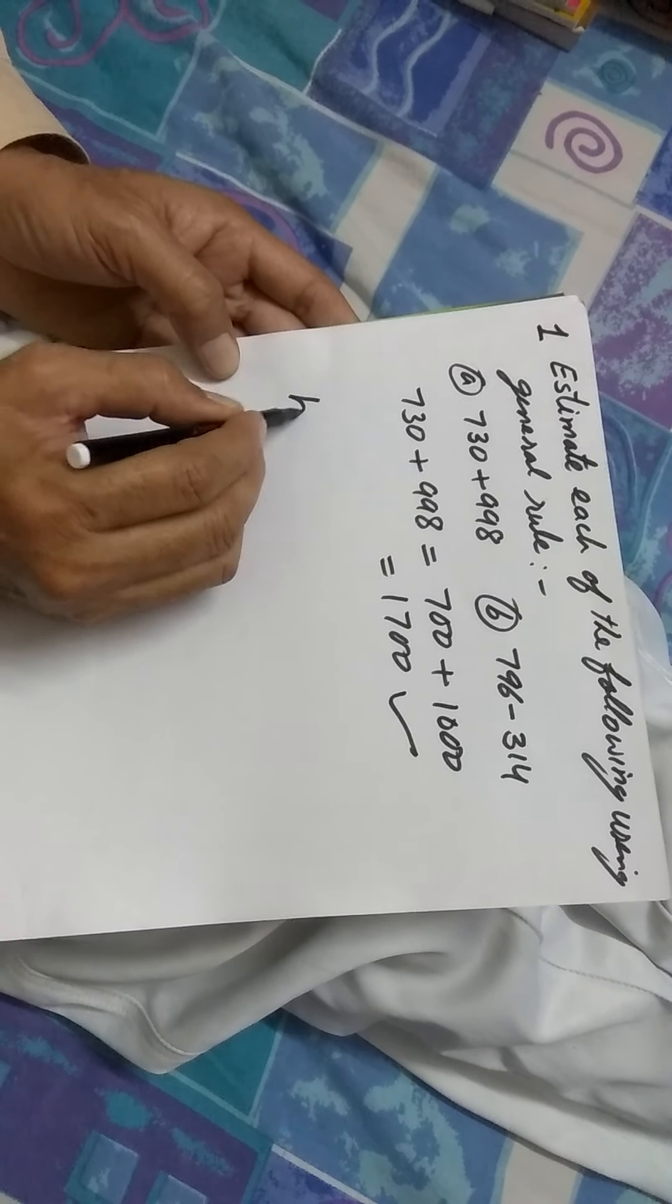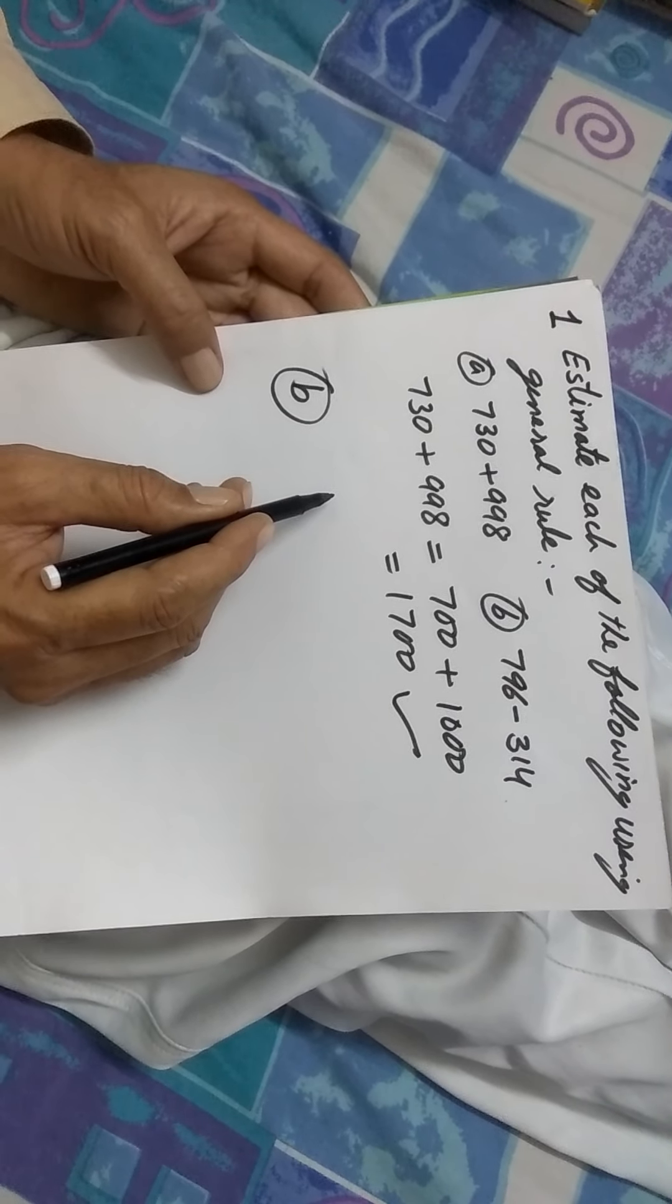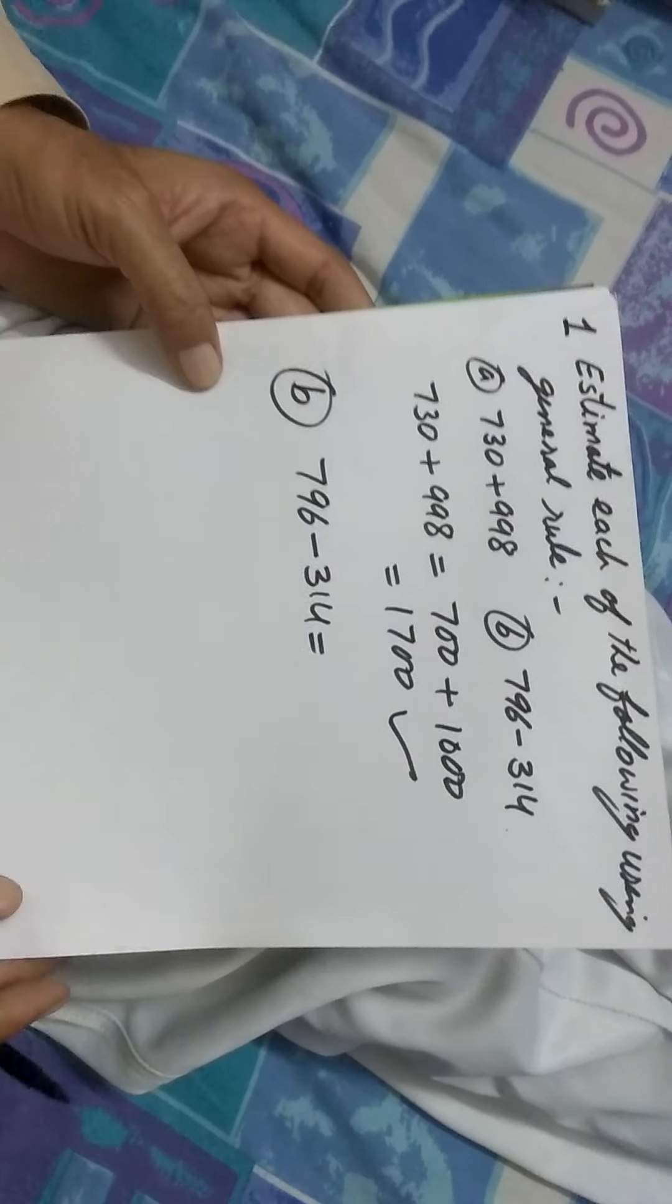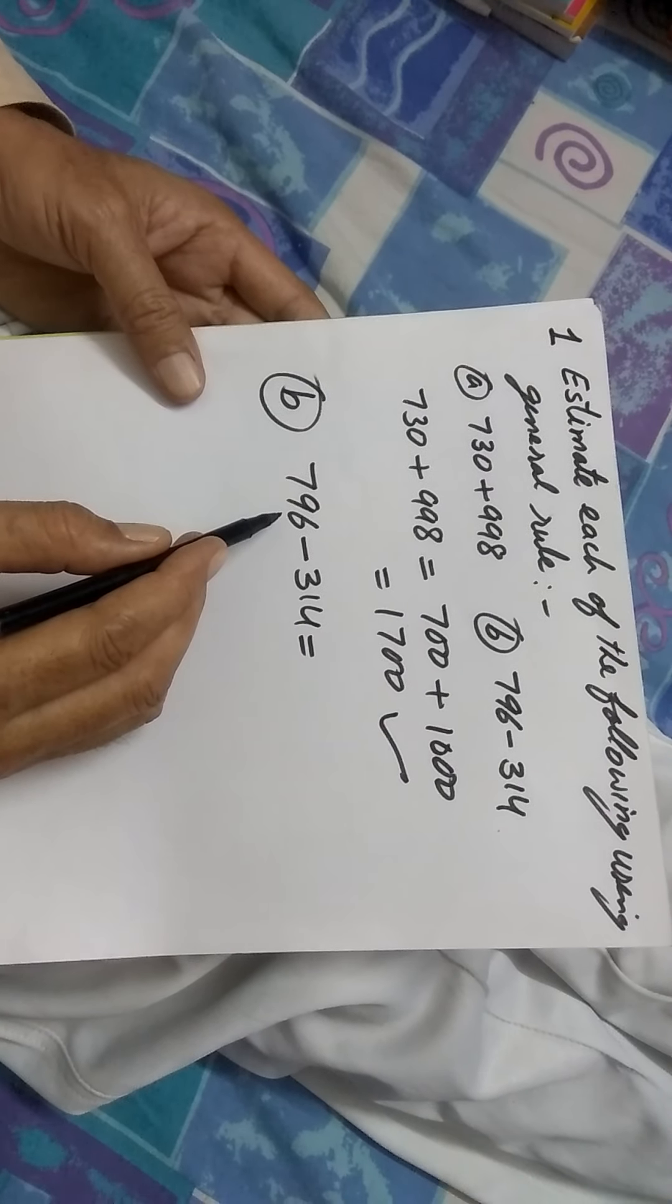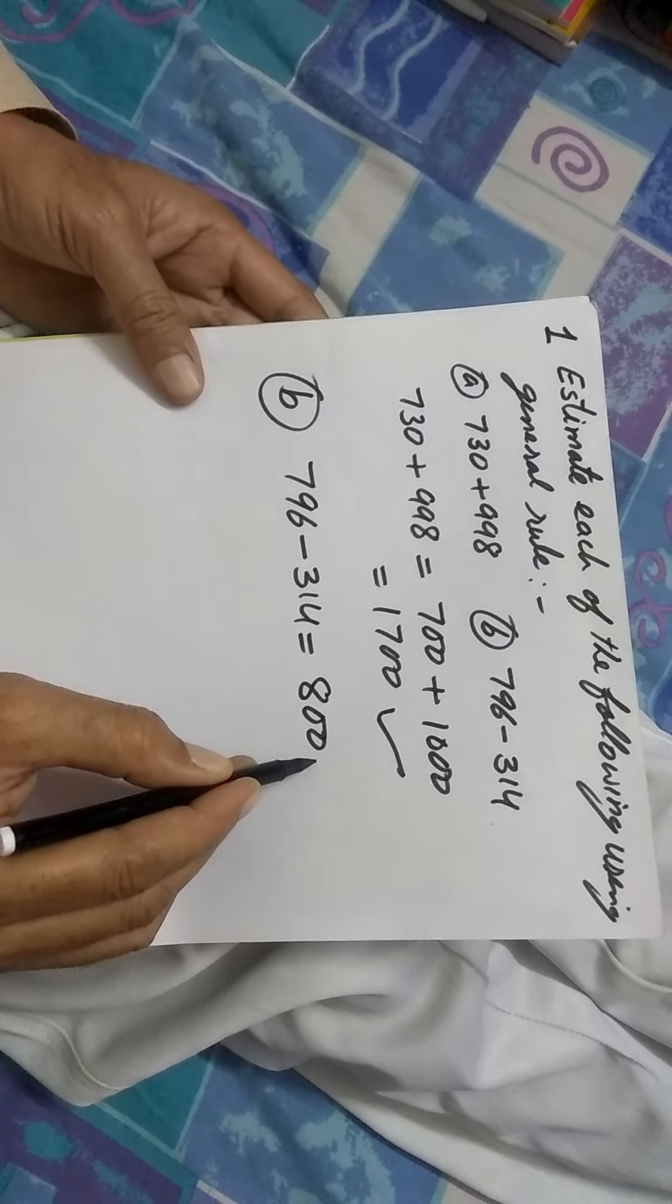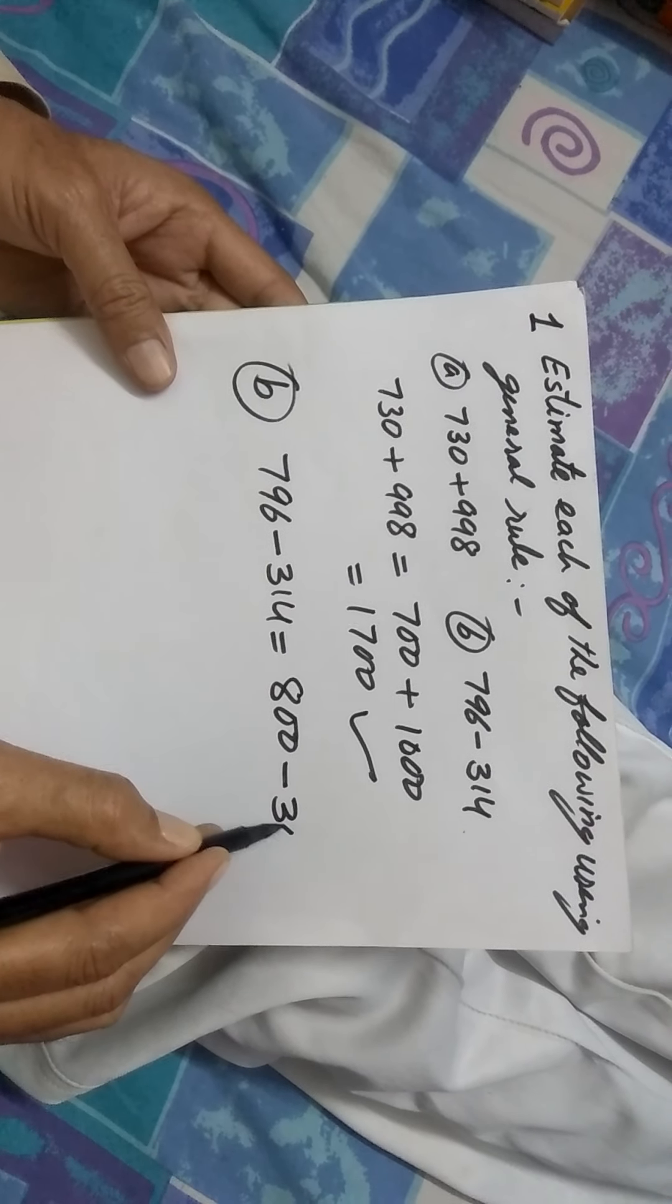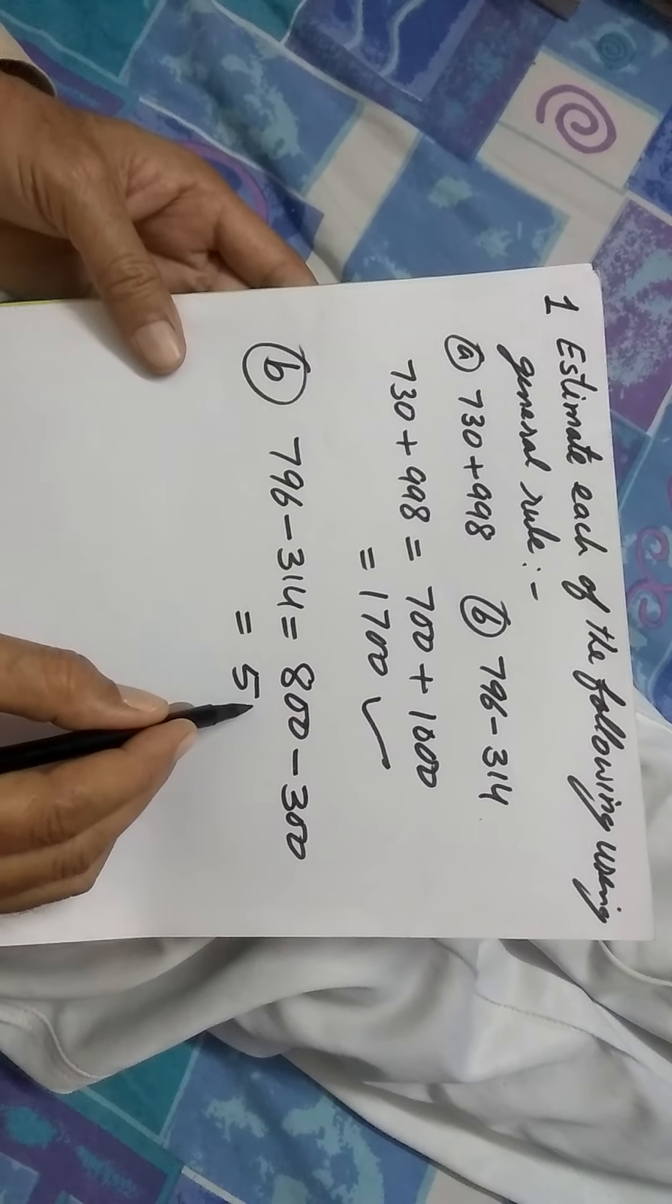Let's take up one more, the second one. See, here you have to subtract 314 from 796. Let's do the operation. These are the two numbers. The operation subtraction is to be followed. The first one is 796. It is more than 750, so it is to be estimated to 800. Whereas, the next number is 314, which is less than 350. Therefore, this is to be estimated to 300. And when 300 subtracted from 800 gives you 500.